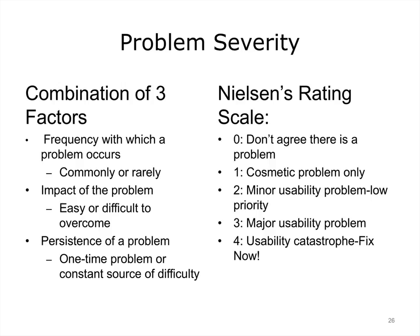The problem severity scale was developed by Nielsen to be used with the heuristic evaluation, but is an excellent tool that can be used with any usability evaluation method. Rating the severity of problems is a very important step in usability analysis. Severity is a combination of three factors: one, frequency with which a problem occurs; two, impact of the problem; and three, problem persistence — does it quickly go away or is it a constant irritant? The rating scale ranges from a cosmetic problem that is not going to be prioritized to a usability catastrophe, which needs to be fixed immediately as it could cause clinicians immense frustration, wasted time, and at its worst, compromise patient safety.